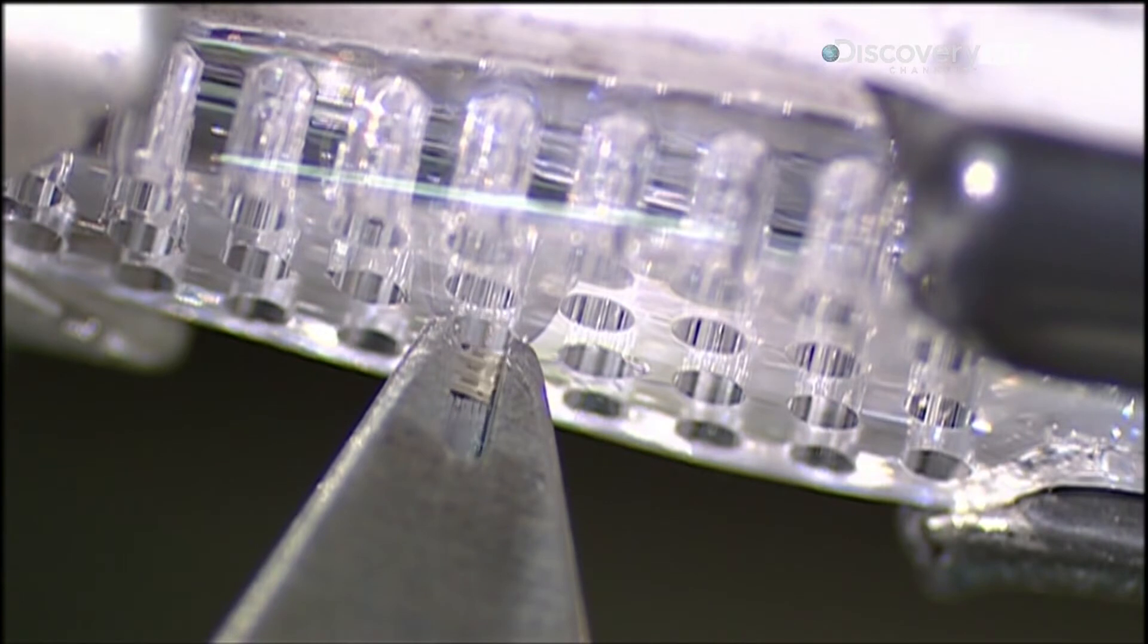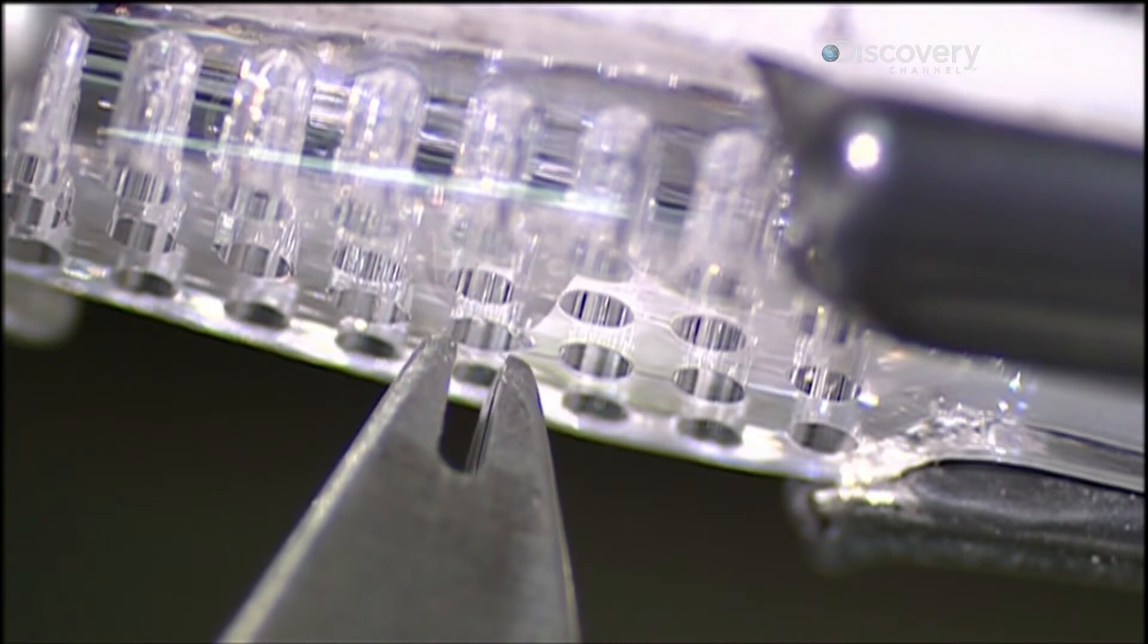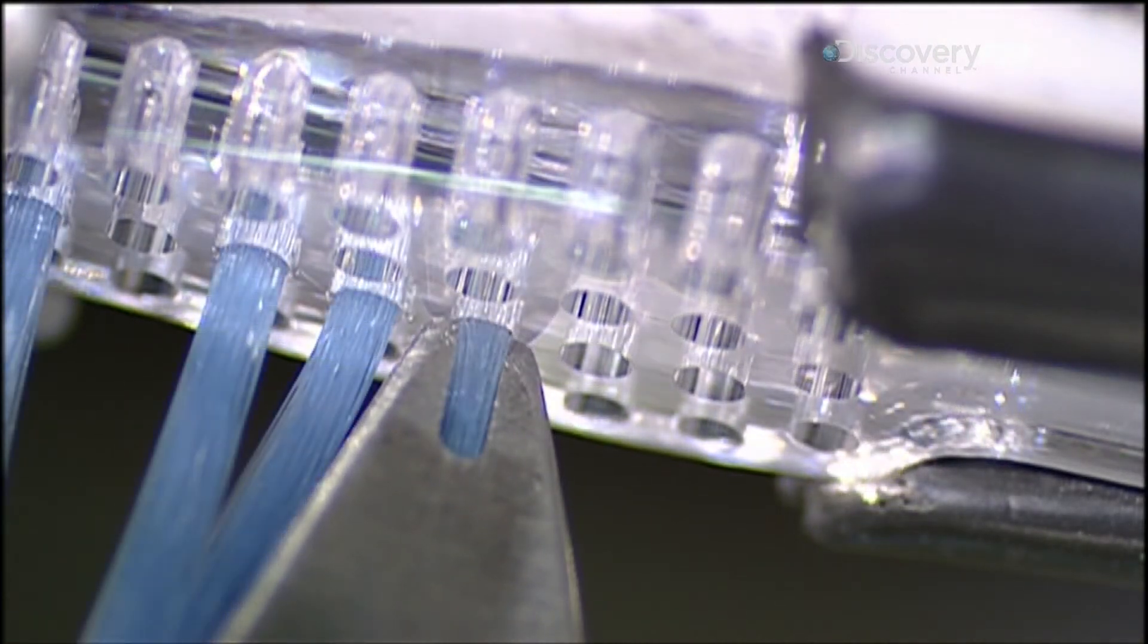Wondering what holds the bristles in place? Wire. The machine bends the fibers in half, anchoring them to the brush with wire in the middle.